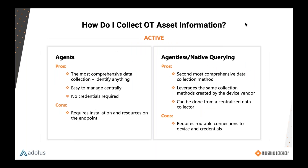So how do you go about collecting asset information? You need a lot of arrows in your quiver. Where available, you should embed agents on endpoints. The pros: it pulls back the most comprehensive dataset, it's easy to manage centrally, and typically no central credentials are required to extract information. The con is that it requires installation resources on endpoints, and many DCS and gateway vendors have warranty implications associated with installing software other than their own DCS application.